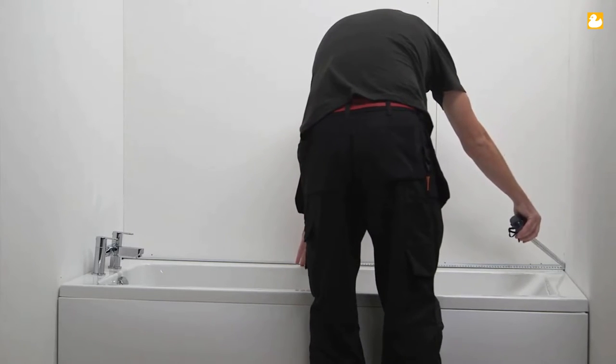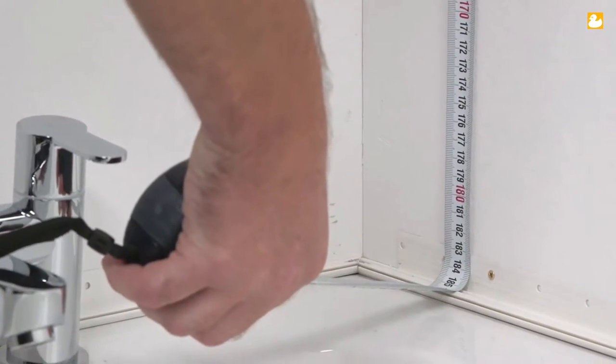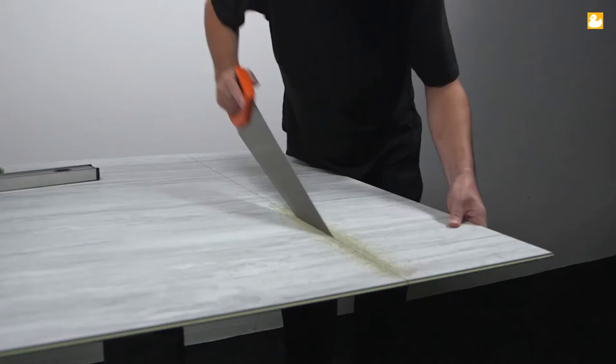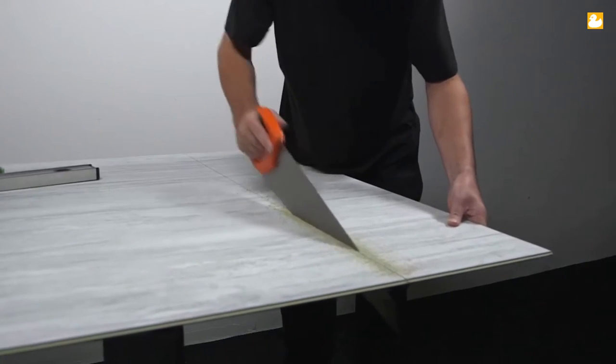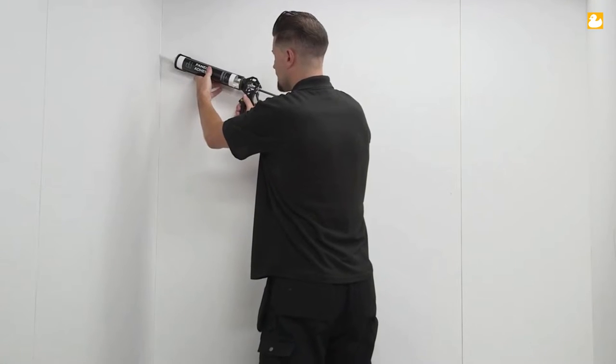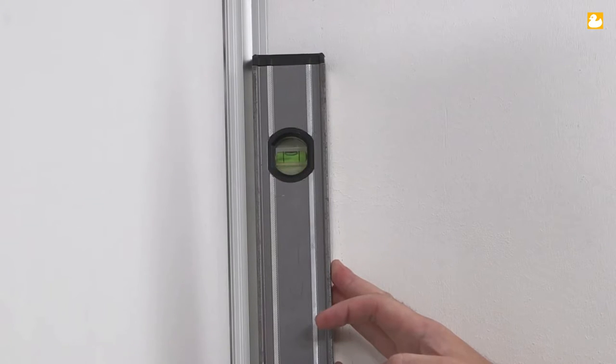Now we're ready to fit panel 1. Measure the height required, then cut the panel to fit. Cut with the decor side up to avoid chipping. Cut using either a handsaw, jigsaw or circular saw. Fix the internal corner to the wall using shower wall adhesive. Ensure this is level.